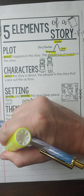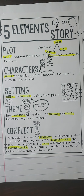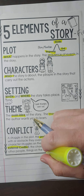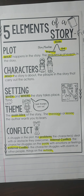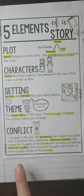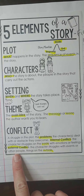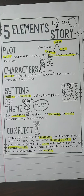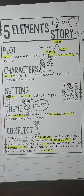An external conflict is when I struggle on the outside — I'm struggling with other people, things, or objects. So the difference is: internal is inside, and external is outside. For example, if my sister and I are fighting over who gets the last cupcake, that's an external conflict because it involves other people.